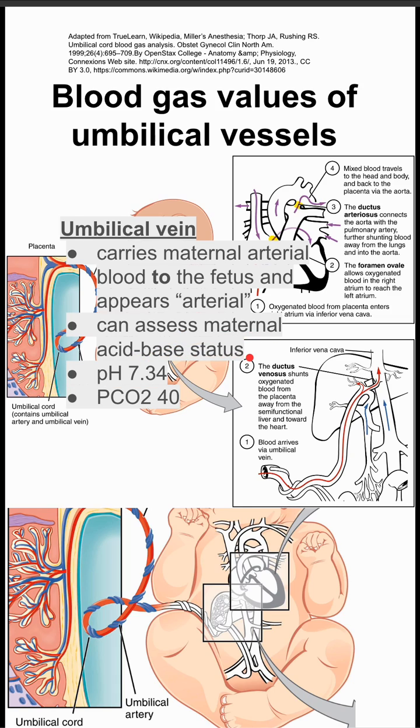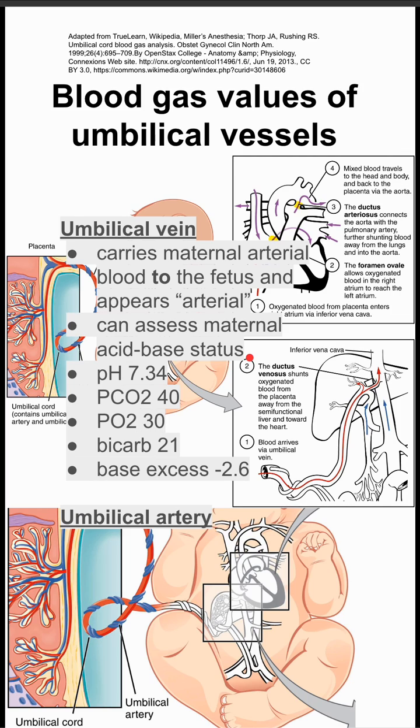Typical umbilical vein values: pH is 7.34, PCO2 is 40, PO2 is 30, bicarb is 21, and base excess is negative 2.6.